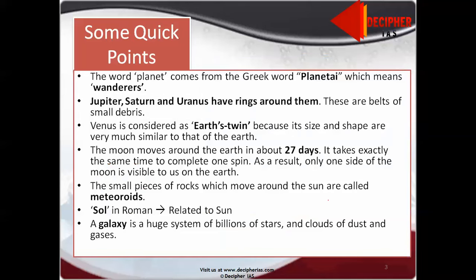Some quick points. The word planet comes from the Greek word planetai which means wanderers. Planet is something which doesn't have its own heat and light, otherwise it will become a star. Planet gets its heat from the Sun.